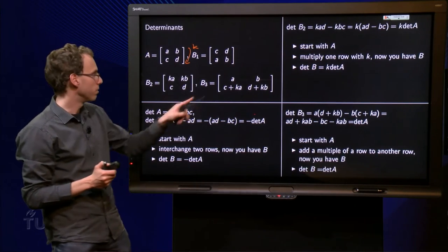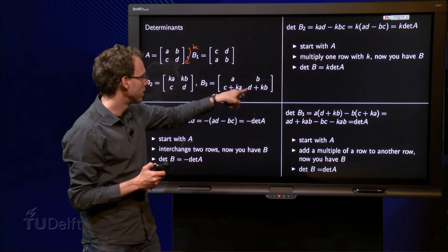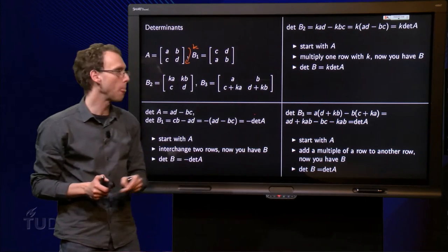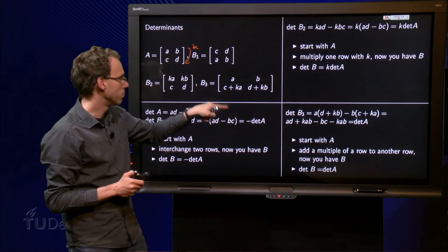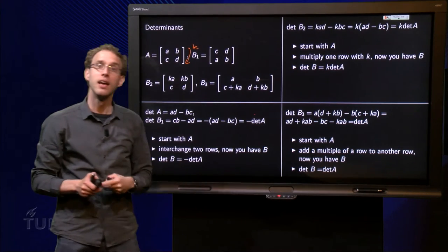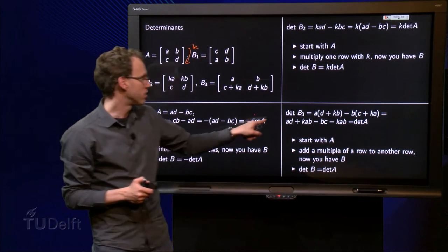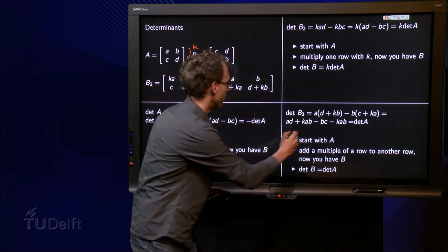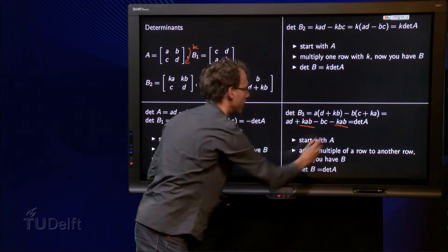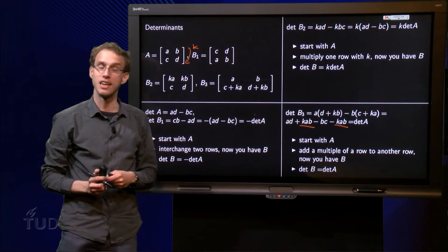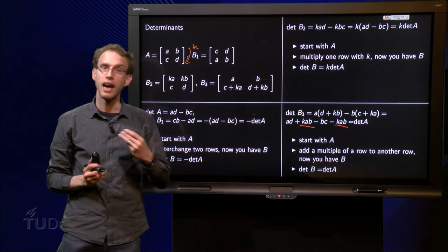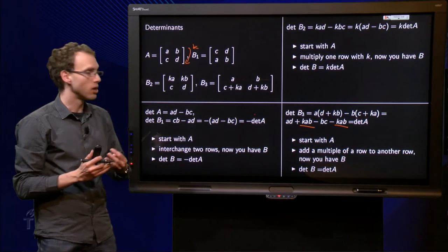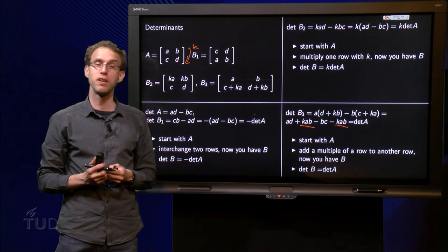Well, let's compute the determinant equals A times D plus K times B minus B times C plus K times A. I just work out the brackets: AD plus AKB minus BC minus KAB. And then we see, those two are cancelling out, and we just have AD minus BC. So it equals the determinant of A.